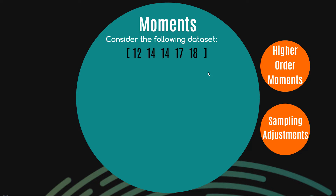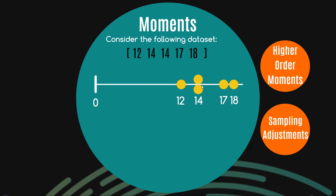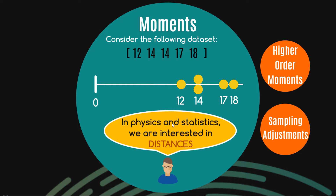Let's develop our intuition with the following data set: 12, 14, 14, 17, and 18. I can draw this on a number line — the points exist at 12, two observations at 14, 17, and 18. Now, in both physics and statistics we're often interested in distances, and this concept of moments is actually shared between the two disciplines. In both, we care about distances.